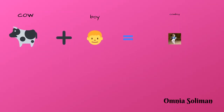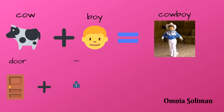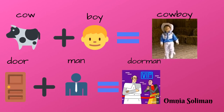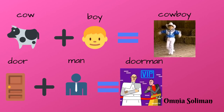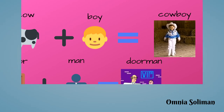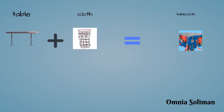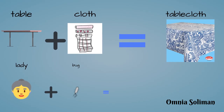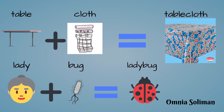Cow plus boy is cowboy. Door plus man is doorman. Table plus cloth is tablecloth. Lady plus bug is ladybug.